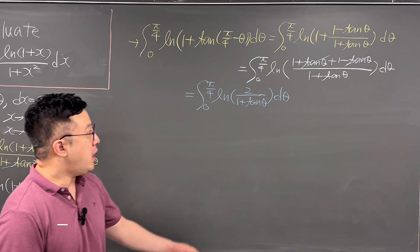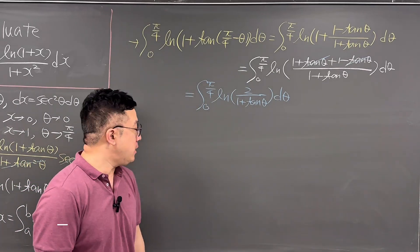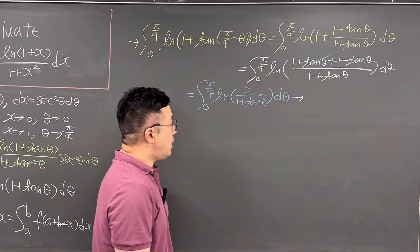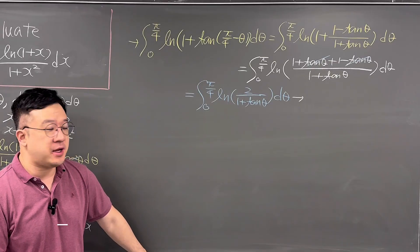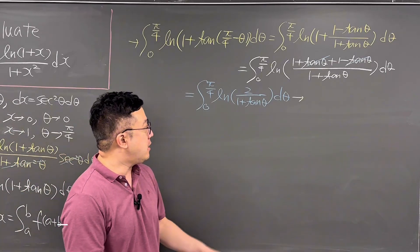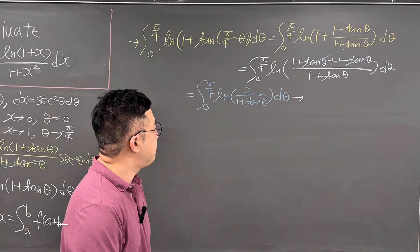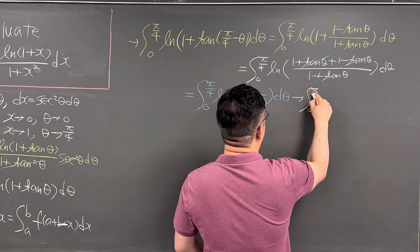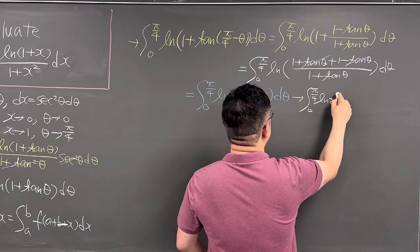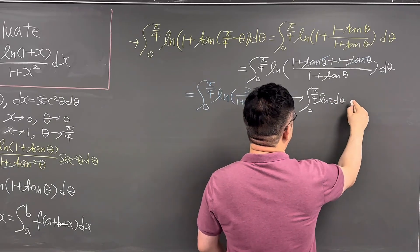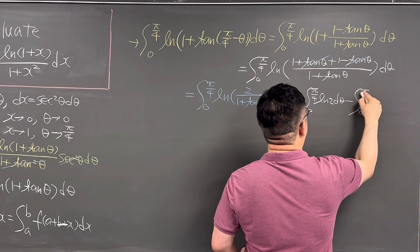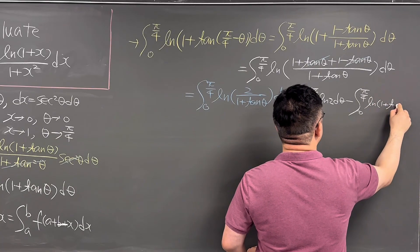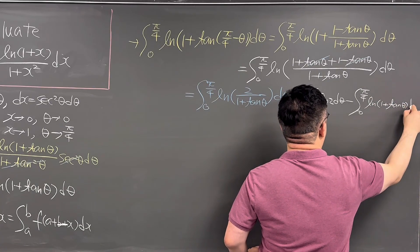Since we have a fraction inside the ln, let's expand it. ln of 2 over 1 plus tangent theta equals ln of 2 minus ln of 1 plus tangent theta. So this becomes the integral from 0 to pi over 4 of ln 2 d theta, minus the integral from 0 to pi over 4 of ln of 1 plus tangent theta d theta.